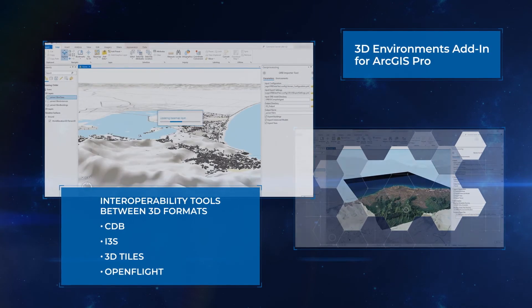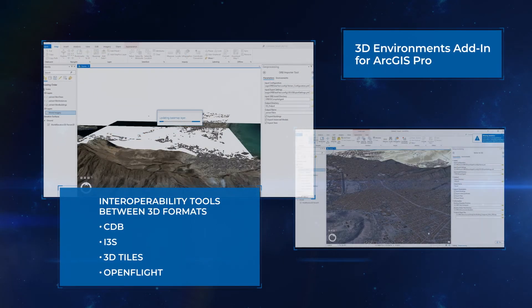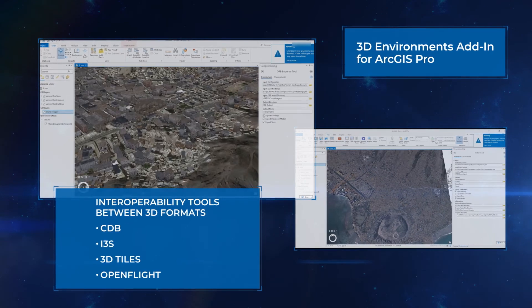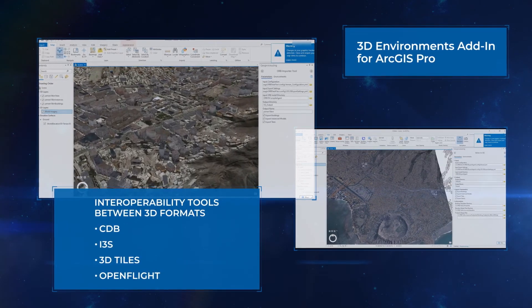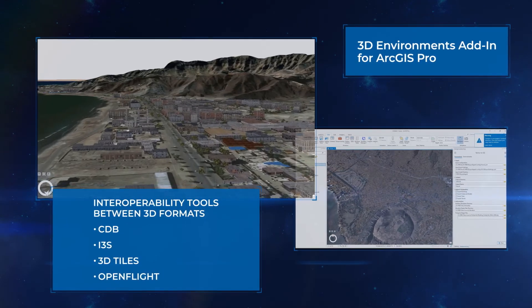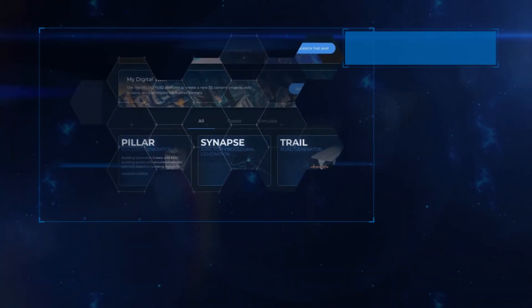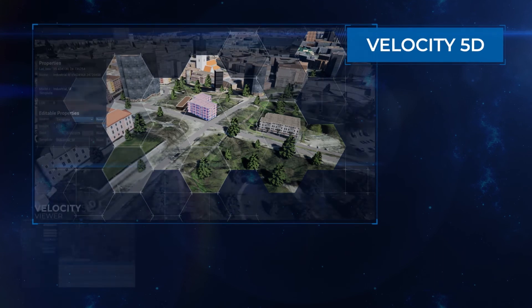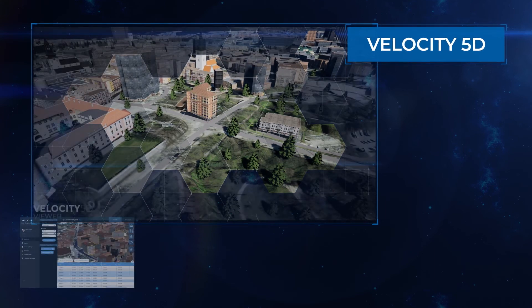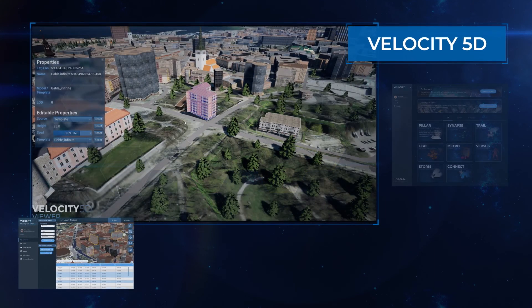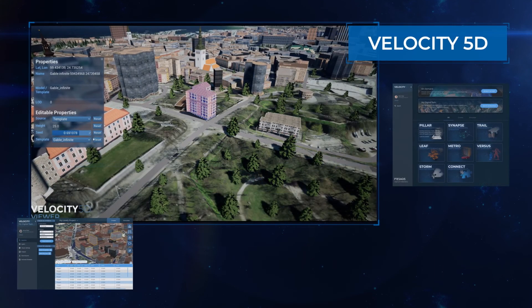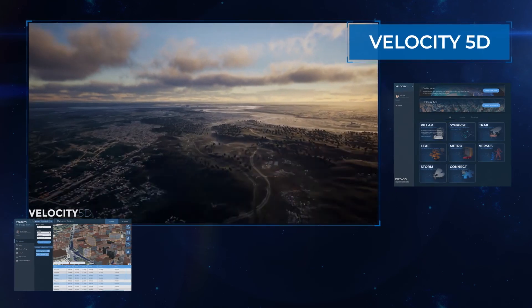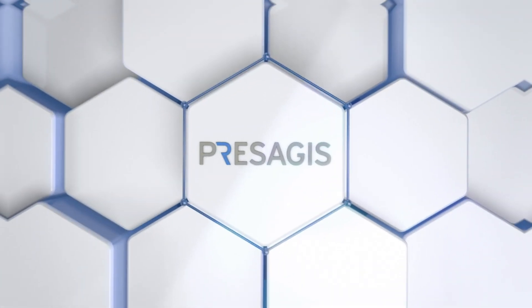The new 3D Environments add-in for ArcGIS includes tools for 3D model and data format conversion. It's also equipped with 3D building templates, Presagius styling algorithms and texture libraries. And coming in 2022, the Velocity 5D ecosystem, which reimagines the way you build, generate and edit your simulation-ready content.